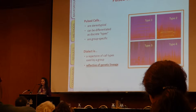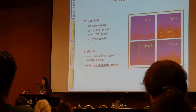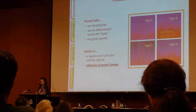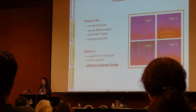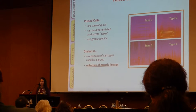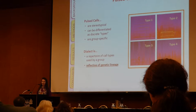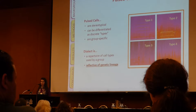The repertoire of call types used by a group is called its dialect. An important point is that dialects are reflective of genetic lineage. This makes sense when you think back to the idea that killer whales are socially learning their vocalizations and are spending most of their time in close association with kin.